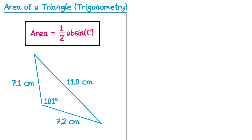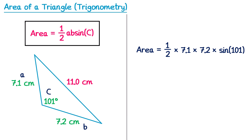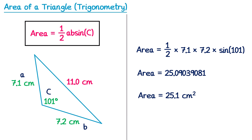Let's try a second example. We look for an angle and the two sides either side of it. The angle given is 101°, and the two sides either side of it are 7.1 and 7.2, so we don't need the 11.0. Labelling the 7.1 and 7.2 as a and b, and 101° as capital C, we apply the formula: area equals one half multiplied by 7.1 multiplied by 7.2 multiplied by sine 101. Rounding to one decimal place gives 25.1cm squared.